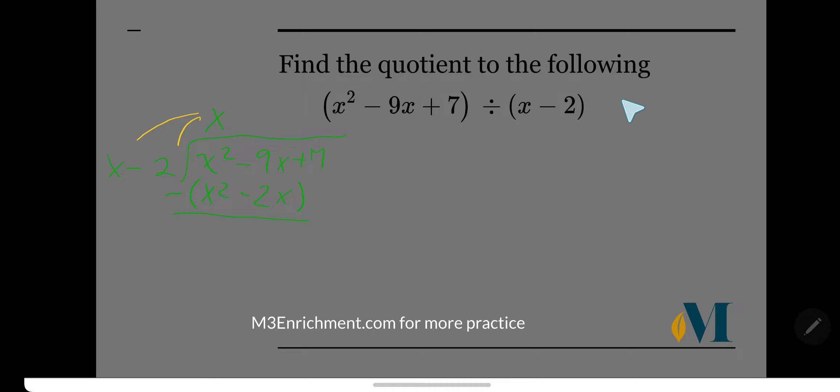I'm going to turn this to an addition problem and change the signs of everything inside. So we have negative 9x plus positive 2x. So that's going to be negative 7x. And our first terms cancel out x squared plus negative x squared. That's zero. We can bring down our last term here, 7.